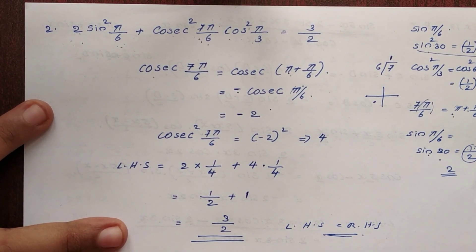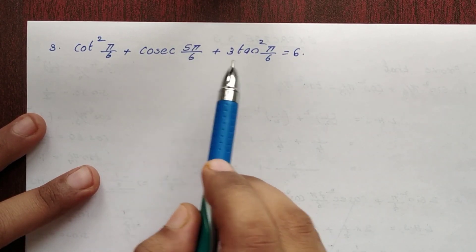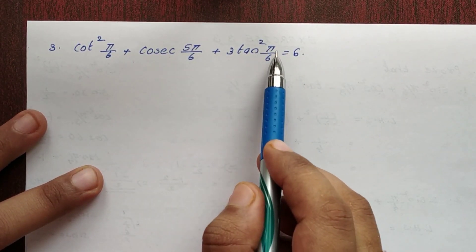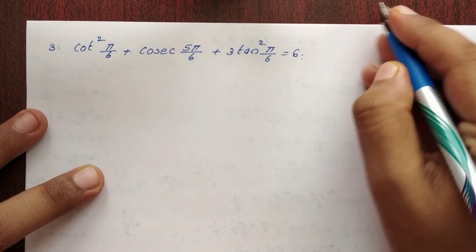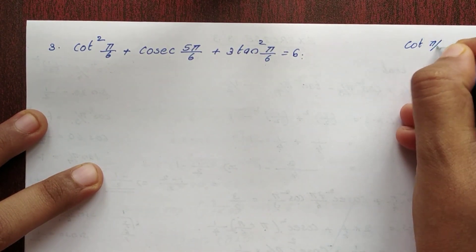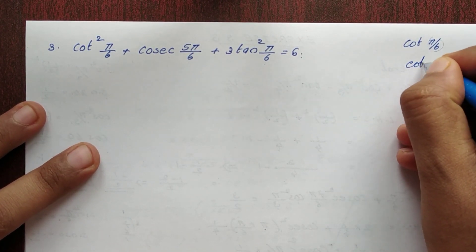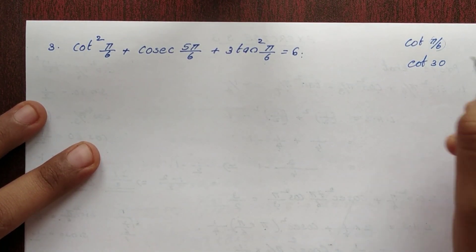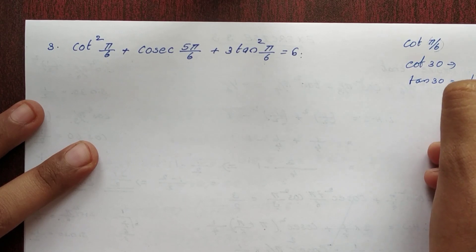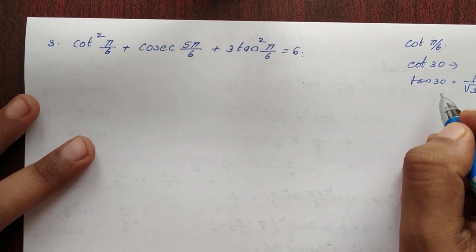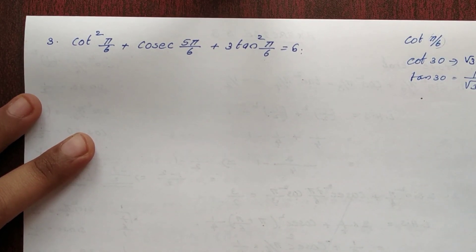Hence it is proved. Third problem: cos²(π/6) plus cosec²(5π/6) plus tan²(π/6) is equal to 6. Okay, LHS is equal to RHS. π by 6 is equal to 30 degrees. tan 30 value is 1 by root 3.